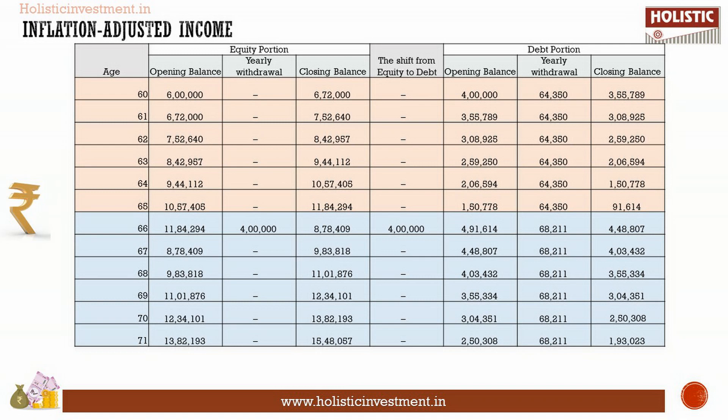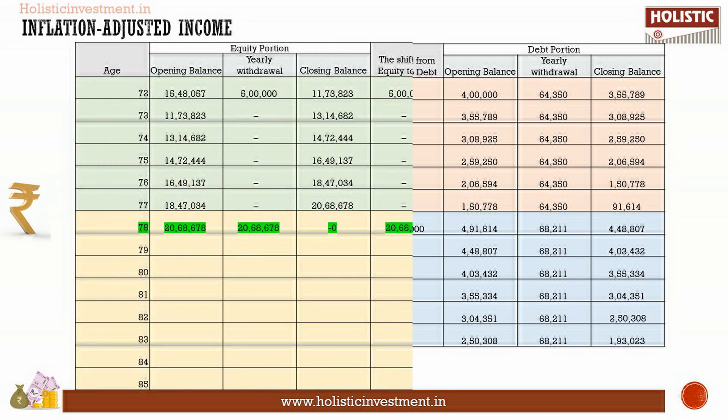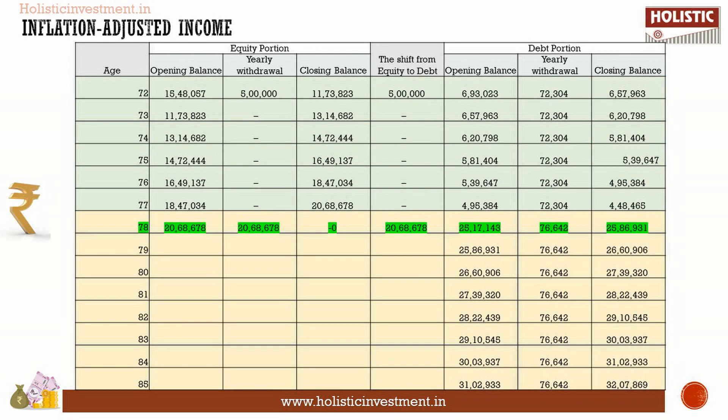Also, every 6 years, your annual withdrawal increases by 6% to combat inflation. This strategy helps to combat inflation even during the post-retirement period. At the age of 78, the equity portion is fully shifted to debt, which can be done according to your risk-taking capacity. Even if we shift the entire corpus to debt, the corpus outlives you.